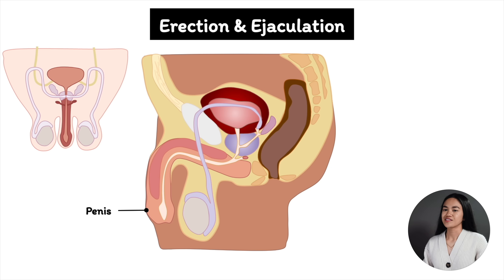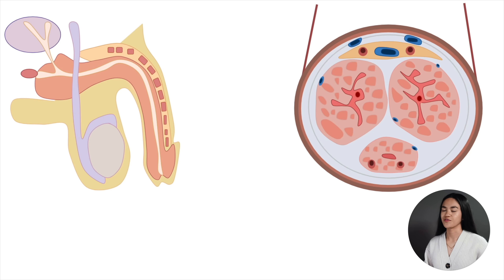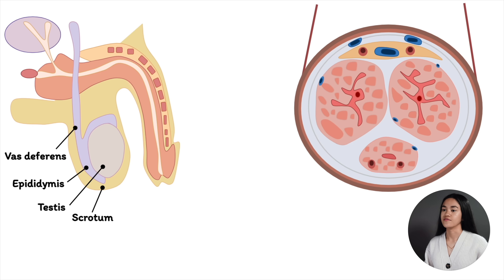Let's begin this lecture by breaking down the anatomy of the penis. If you have seen the lecture on the anatomy of the male reproductive system, then you already know the anatomical organization of the male reproductive tract. Let's take a closer look at the penis. For a quick review: we have the scrotum, the testes, epididymis, and vas deferens.